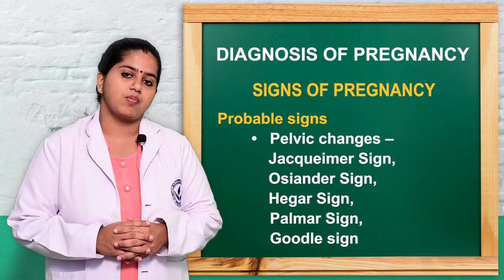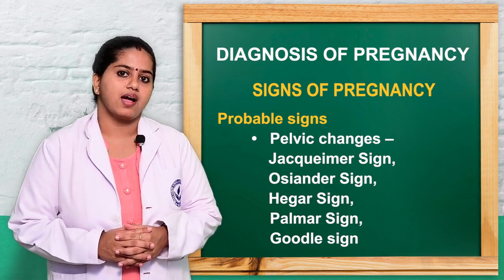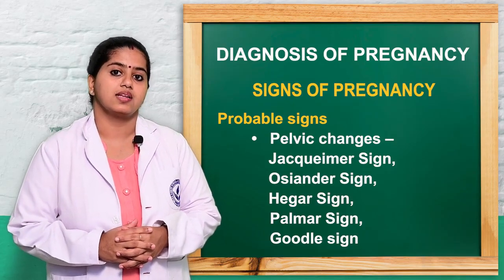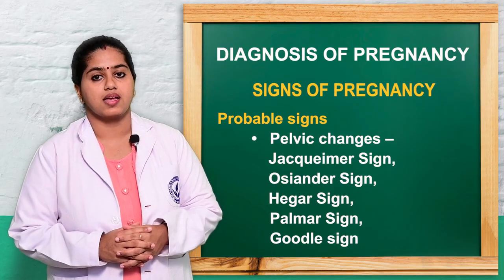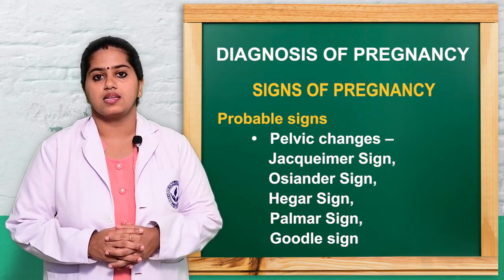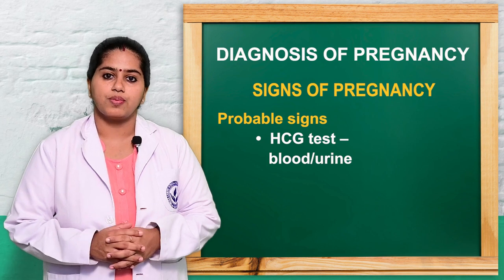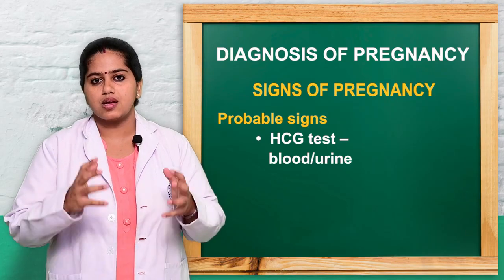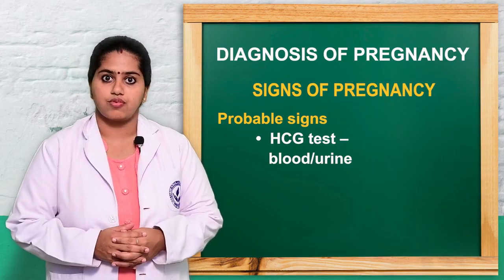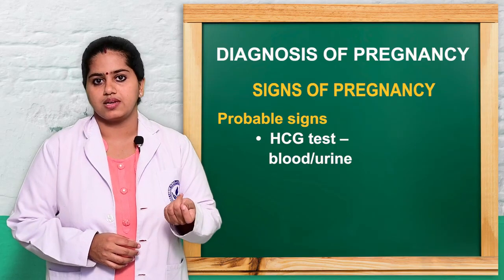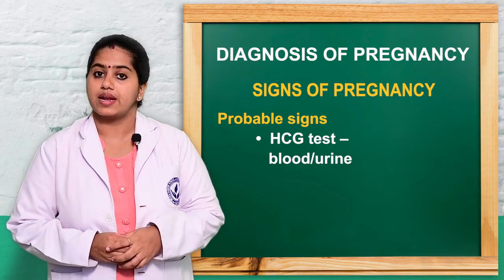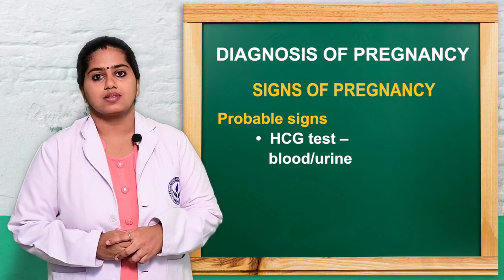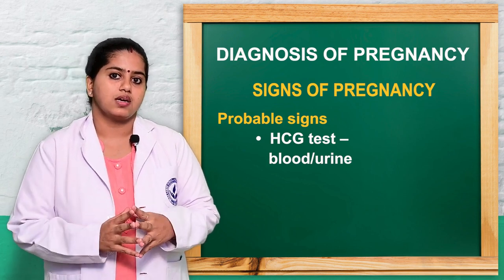The next category is probable signs. Probable signs include pelvic changes such as Jacquemier's sign, Osiander's sign, Hegar's sign, Palmer's sign, and Goodell's sign. Women can also be assessed for the presence of HCG in the blood and urine. However, probable signs also cannot confirm pregnancy — for example, HCG is also present in ectopic pregnancy and hydatidiform mole.